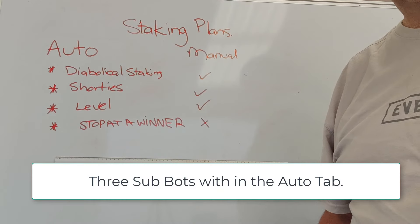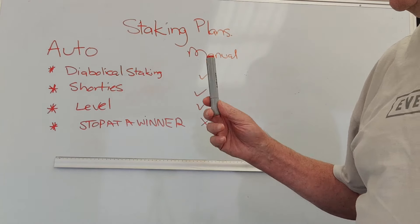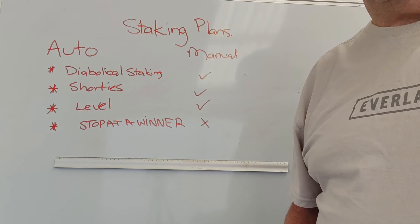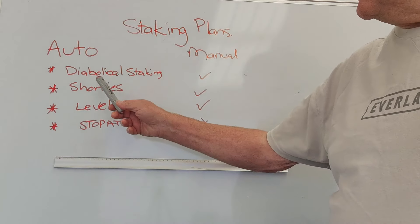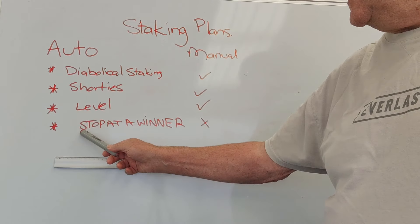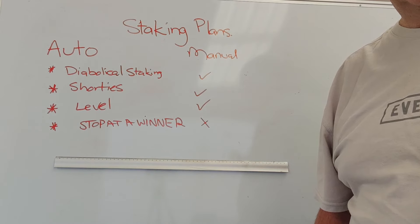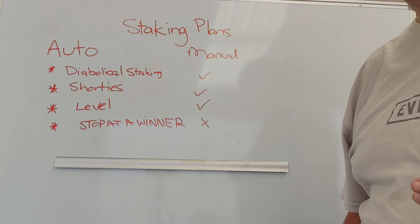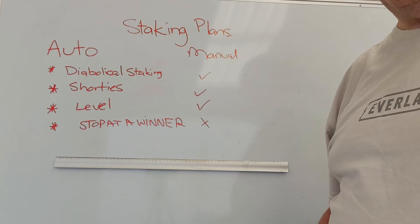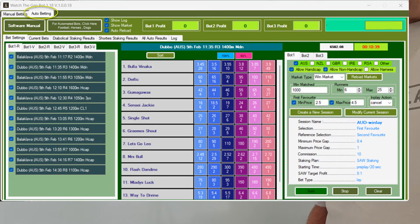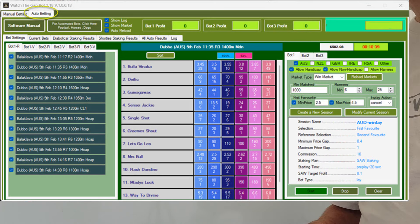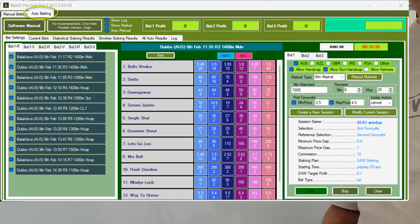The auto section has 3 sub-bots so you can run 3 separate strategies. You might want the place market 1.3 to 1.8, so any horse that fits that criteria — you can use the Diabolical, you could use it in Shorties, and you could use Stop at a Winner, so you could use 3 staking plans. But you'd be better off using bot 1 for the place scenario, bot 2 for a win scenario with a different staking. It's only through looking at what the bot does on auto that you can fine-tune and program exactly what your settings will be. You can have a myriad of settings like the gap settings and the runner fields.